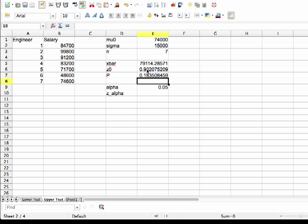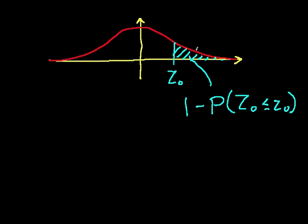Now again, we could also solve this problem by being given an alpha and computing a z-alpha. In this case, we compute z-alpha as normsinv of 1 minus alpha. So that gives us a z-alpha of 1.645 more or less. So in this case, our z-alpha is up here to give us a 0.05 probability, and because our z0 is less than z-alpha, we are not able to reject the null hypothesis h0.